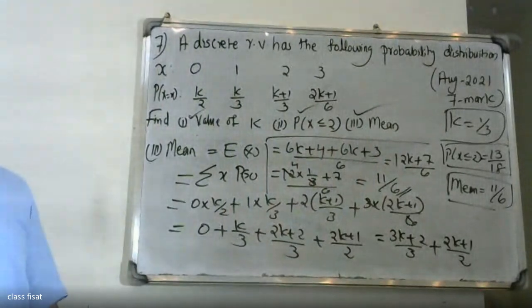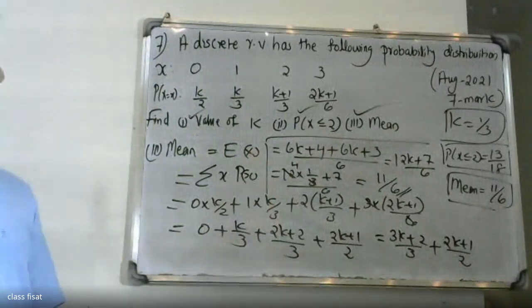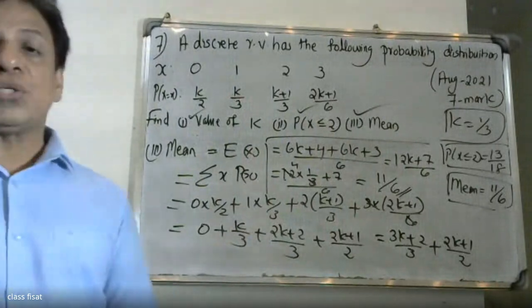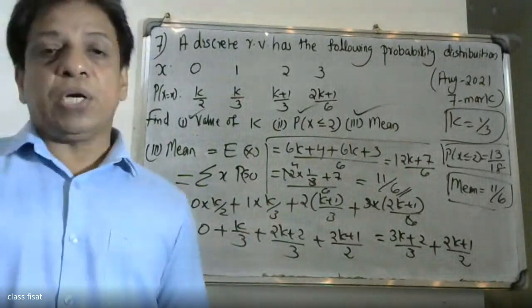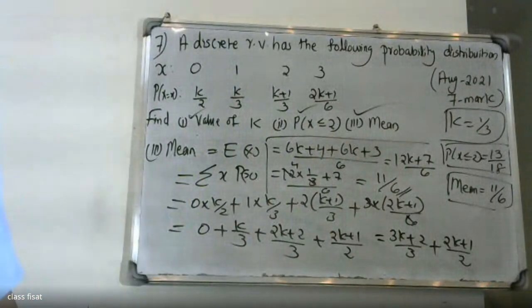If you want to ask the question, the answer will be 11/6, and that is the expectation of X. You will have 7 mark questions. You will have noted in the follow-up.